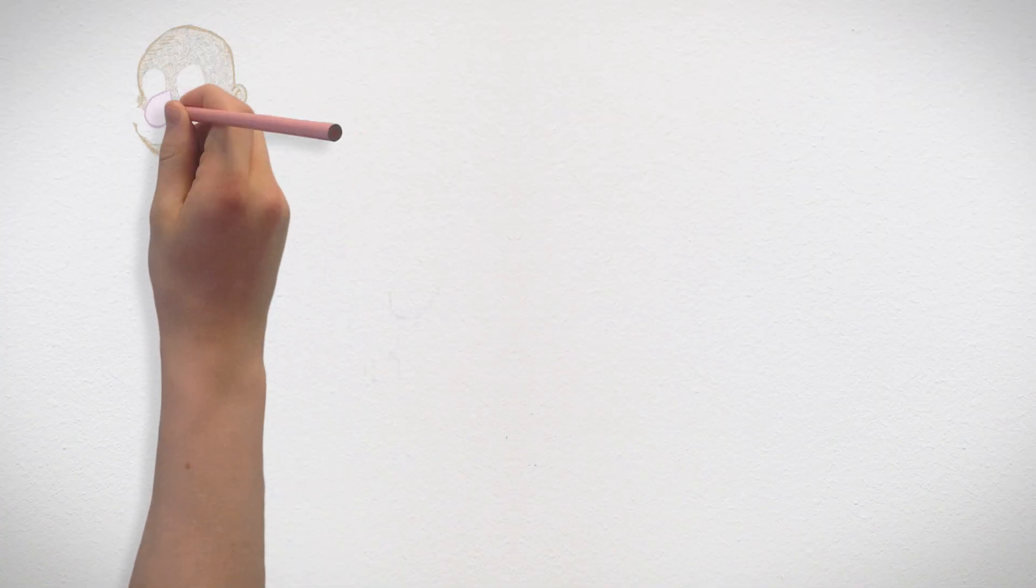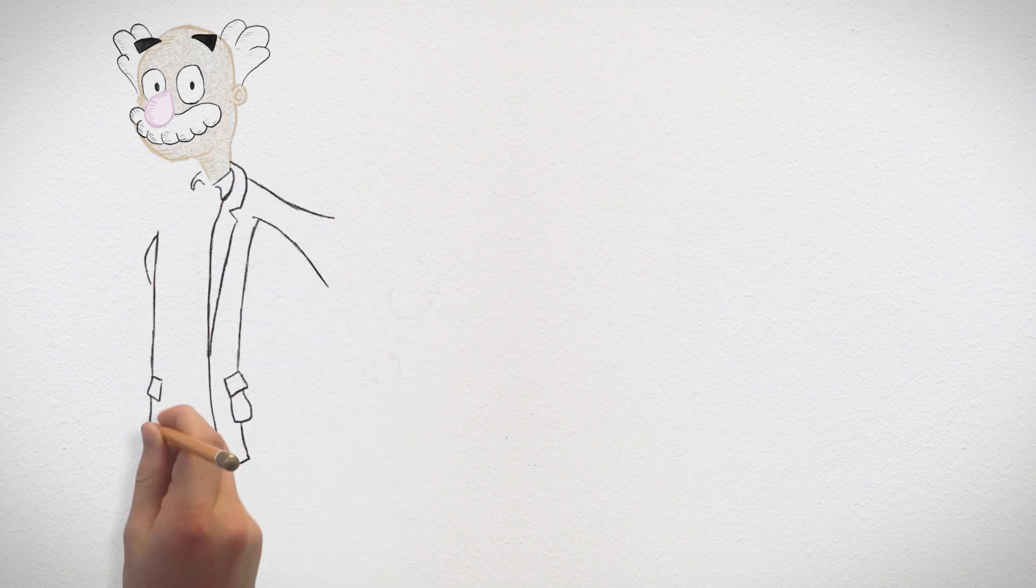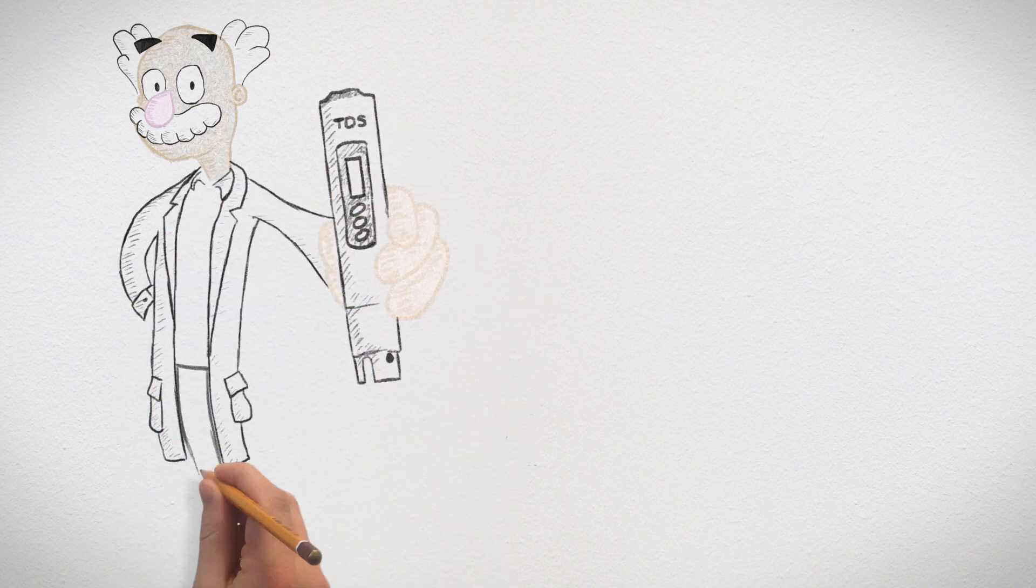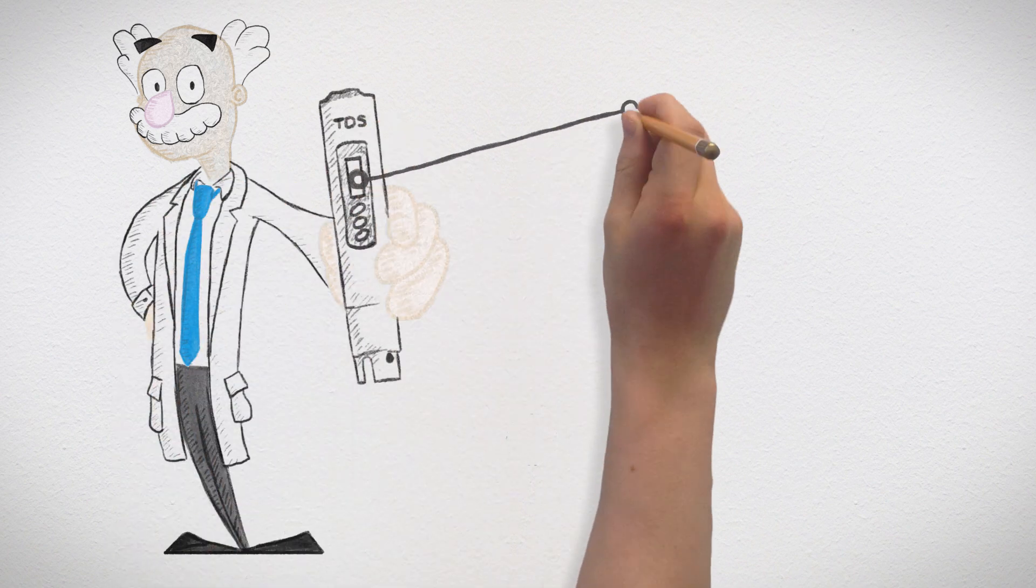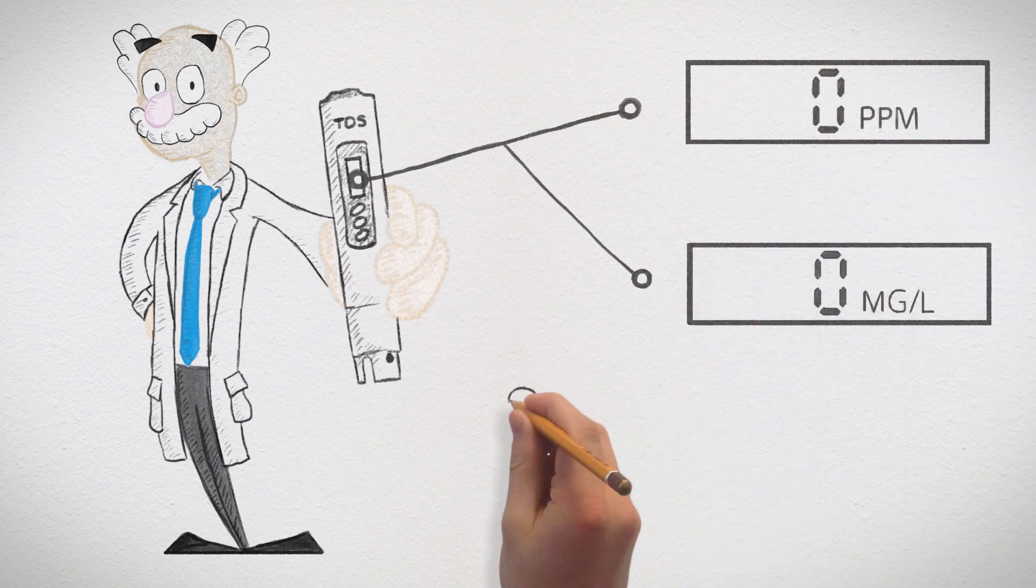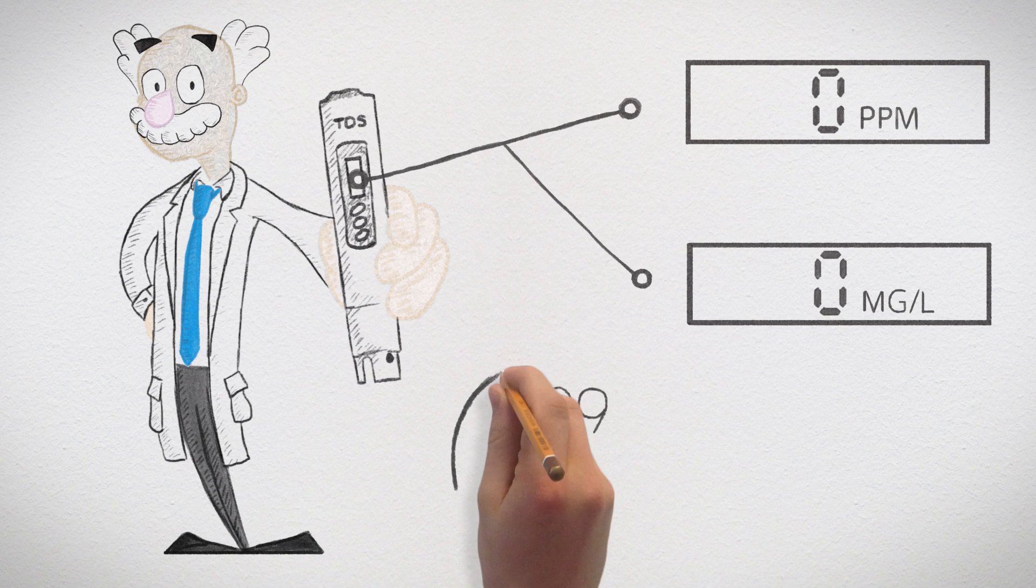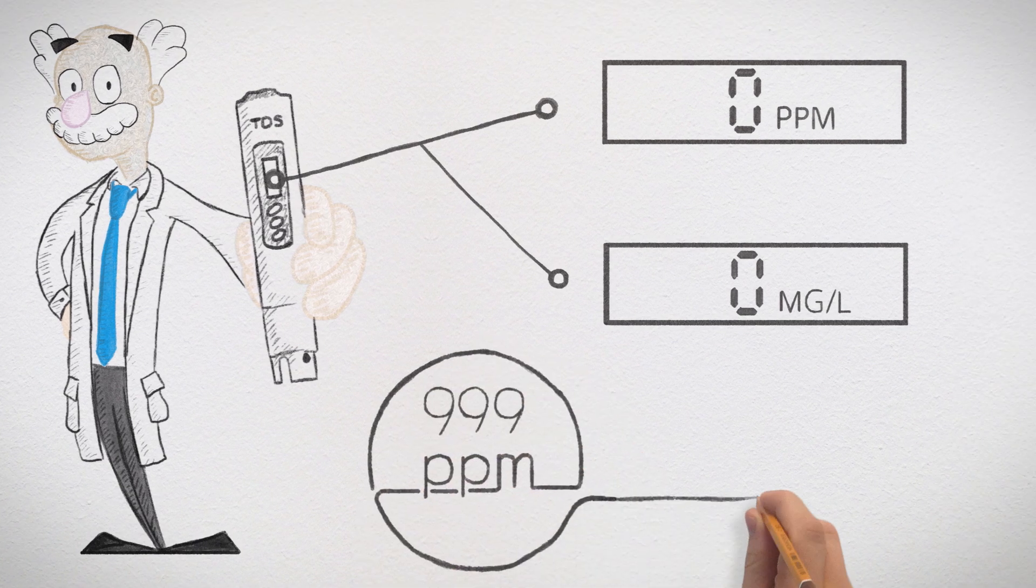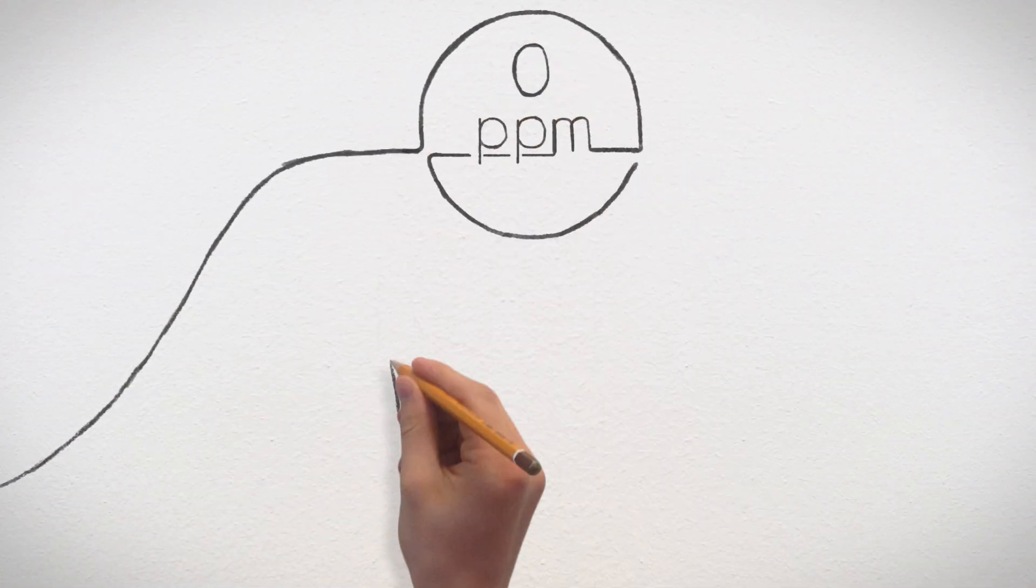Inexpensive handheld test equipment called TDS meters are available to measure water quality. They measure the total dissolved solids in water and display the value in parts per million, or milligrams per liter. These TDS meters read from 999 to 0 ppm with no decimal points.